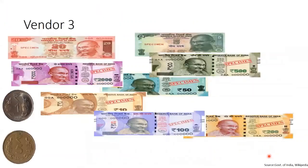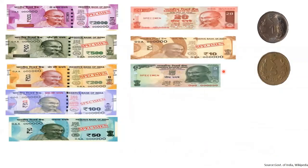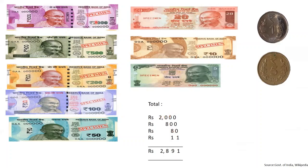Again, let's arrange our currencies conveniently for quick calculation. So, when we add, we take 2000 here. 500 plus 200 is 700, plus 100 is 800. 50 plus 20 is 70, plus 10 is 80. 5 plus 5 is 10, plus 1 is 11. So the total value that you obtain is rupees 2891.